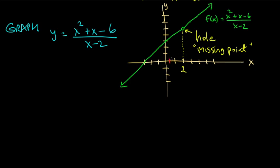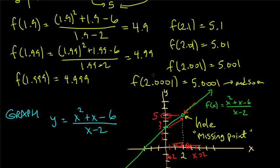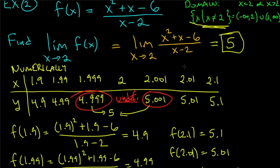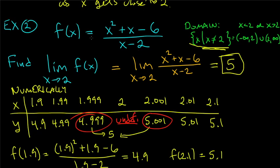The question was: what happens as x gets close to 2? Numerically, we found the limit to be 5. From the graph: as x approaches 2 from the left, y values approach 5; from the right, y values also approach 5. You can get as close to 5 as you want, but you never reach it because when x equals 2, y is undefined.